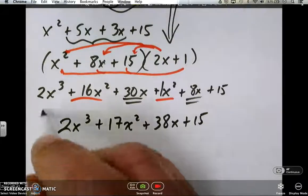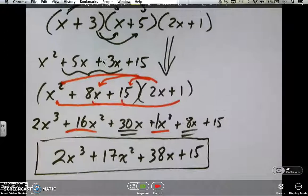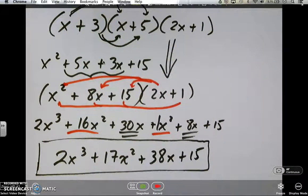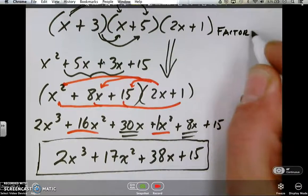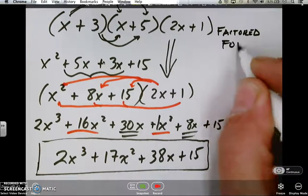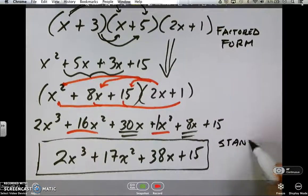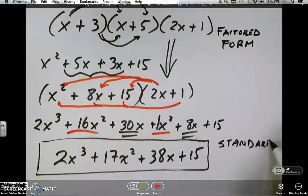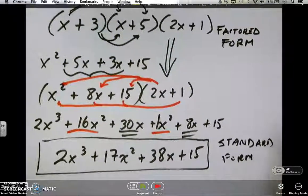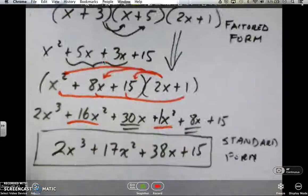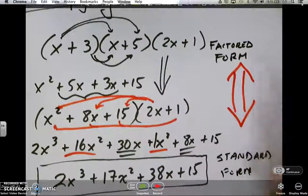Okay, so here's what we end up with at the end after we foil it out. So what exactly did we do here? Well, we actually went from factored form to standard form. And eventually, we want to get comfortable going backwards and forwards.